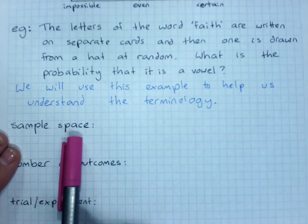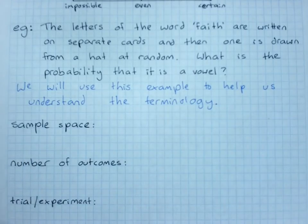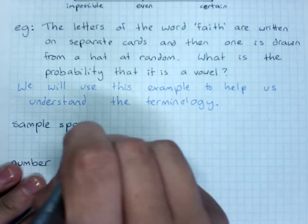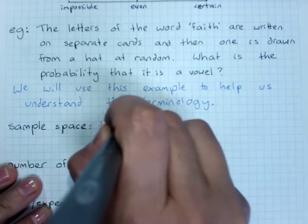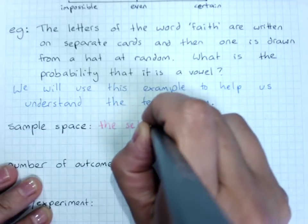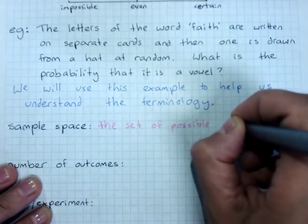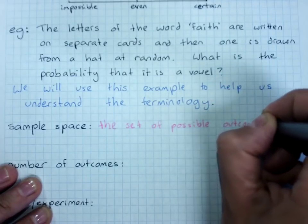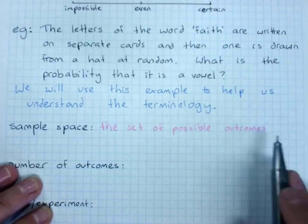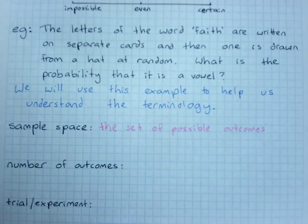So the sample space is the first thing you might be asked for, and this is the set of possible outcomes.